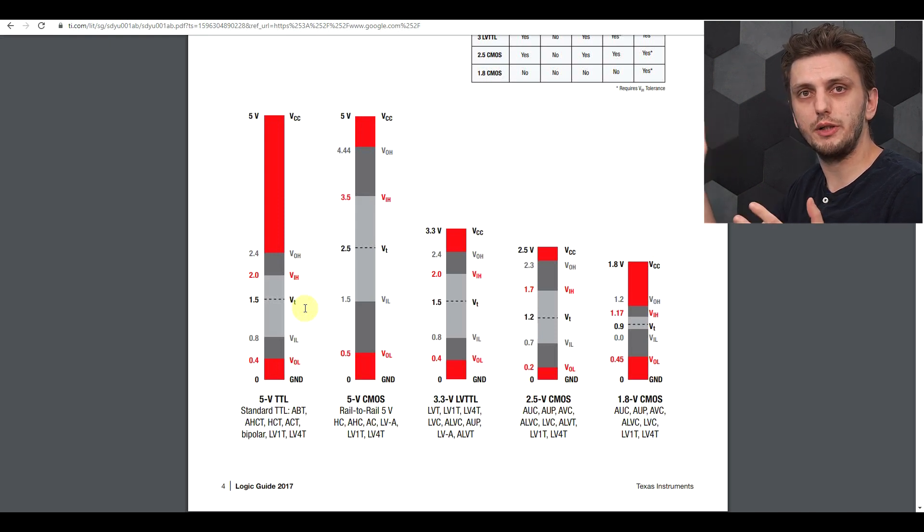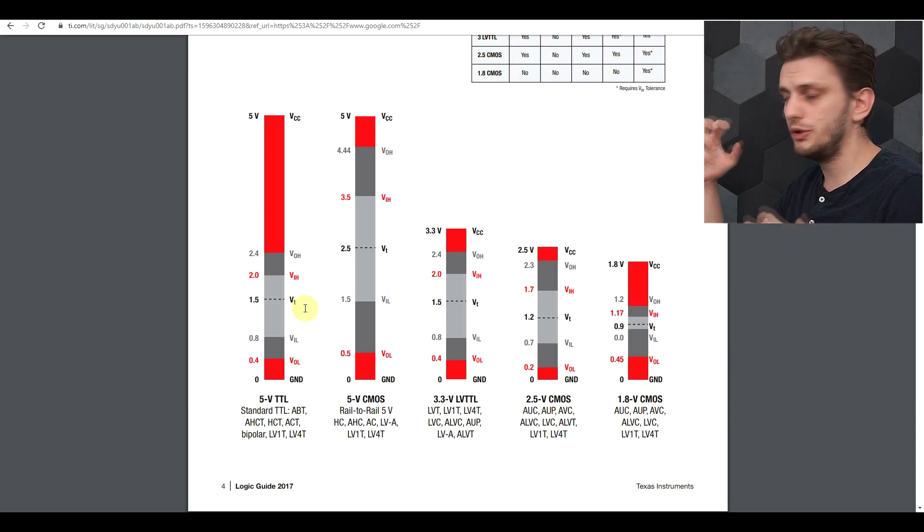The exact threshold point will vary with temperature and with parametric dispersion, so you can't really rely on that point. What you need to do is ensure that your circuit clearly transitions between voltages below the input low threshold and voltages above the input high.